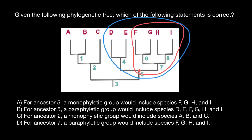Now let's check statement C. For ancestor two, a monophyletic group would include species A, B, and C. For common ancestor number two, which is here, we include all his descendants — species A, B, and C — and this is going to be an example of a monophyletic group. This statement is correct.